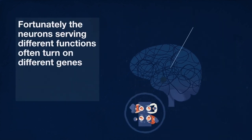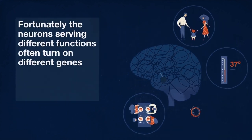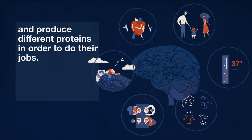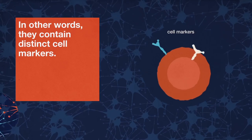Fortunately, the neurons serving different functions often turn on different genes and produce different proteins in order to do their jobs. In other words, they contain distinct cell markers.